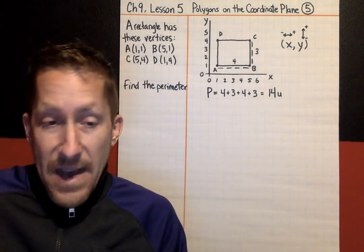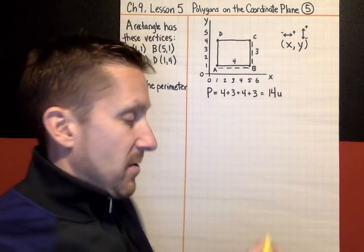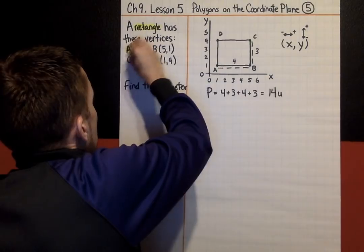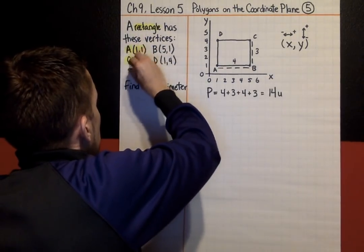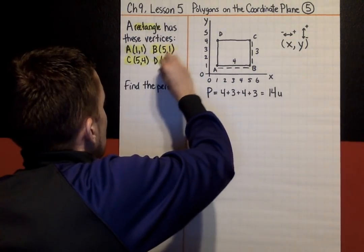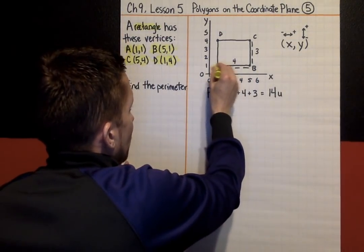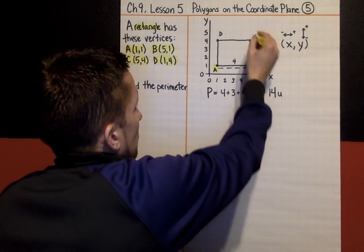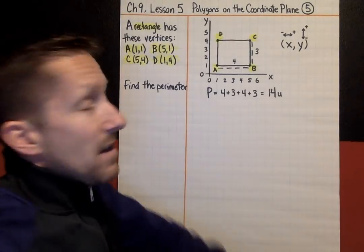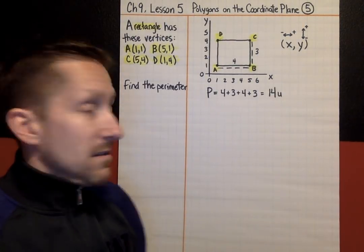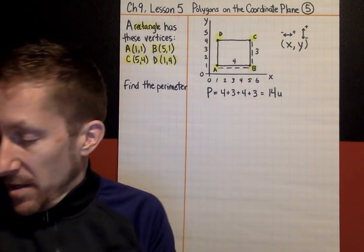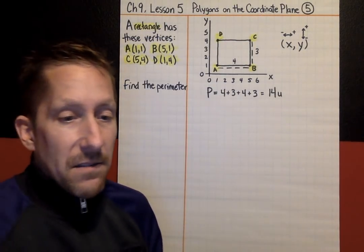So, that is some of the problems you're going to practice today. You'll have a shape, you'll have ordered pairs, you'll graph those points on the coordinate plane, see what the shape is, and do what it says, like find the perimeter of the shape that you just graphed.